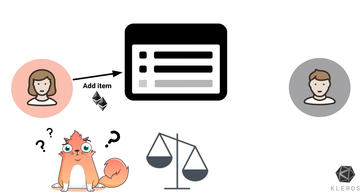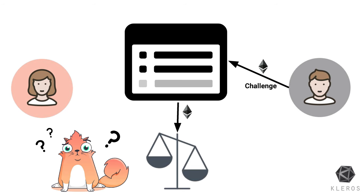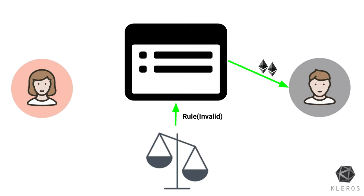But if Alice tries to add an item which should not belong to the list — here, a cat — Bob sees the request and challenges it by putting a deposit. An arbitrator looks at the case: is it a Doge or not? The ruling is 'invalid,' so Bob gets Alice's deposit and gets his own deposit back, minus the arbitration fee.